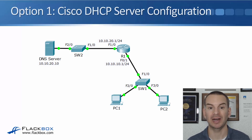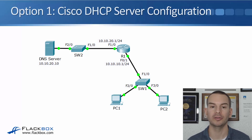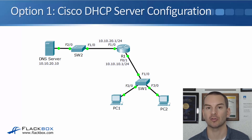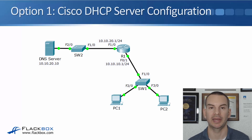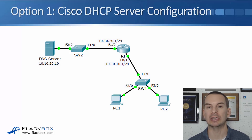So we're going to have a look at this in the lab in a second. In our scenario, we've got a small branch office. We've got R1, which is configured with IP address 10.10.10.1/24 on its FastEthernet 0/1 interface, and there are DHCP clients on that network that it's going to give IP addresses to. We need to configure a DHCP pool for the 10.10.10.0/24 subnet. We've also got a DNS server in the office at IP address 10.10.20.10, and we want to give the client PCs that information as well.